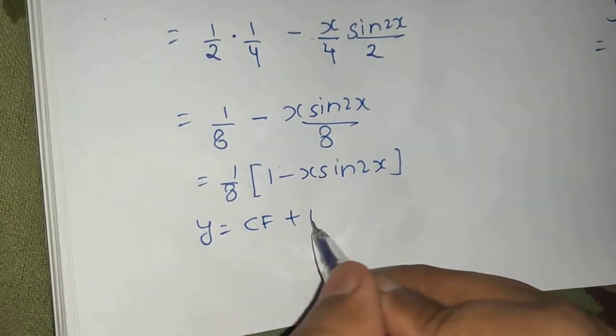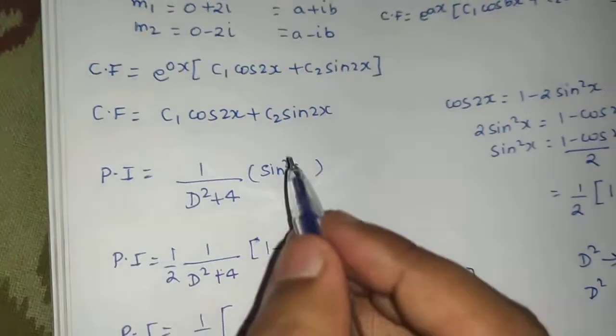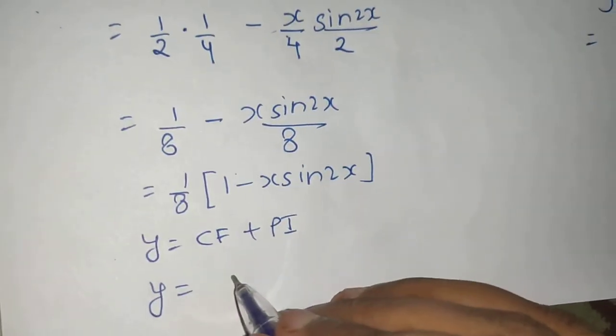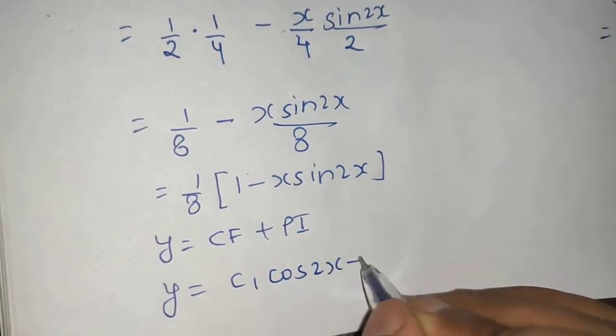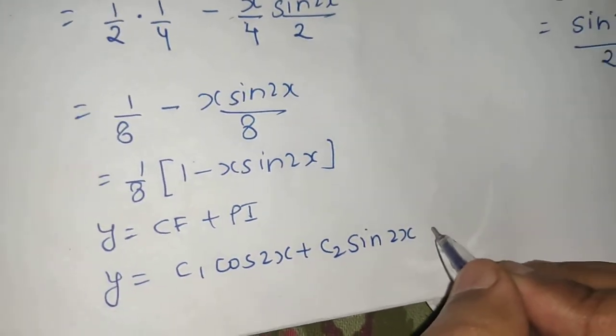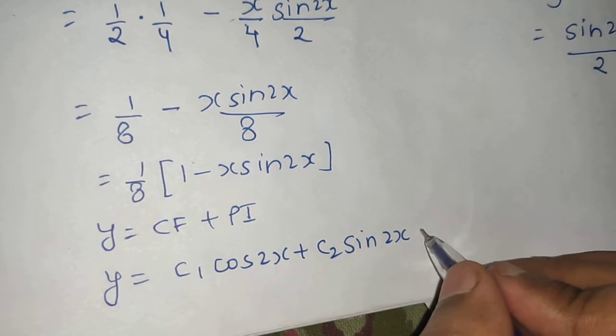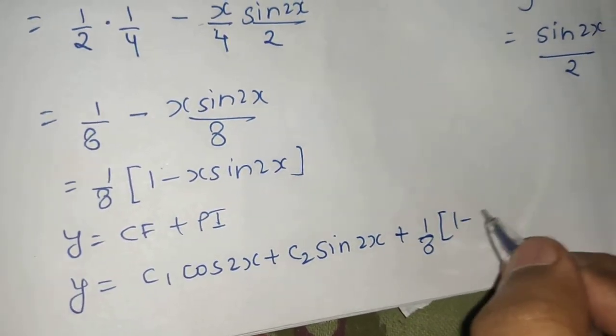So your final solution - your final solution is always y equals to CF plus PI. So y equals to CF was c1 cos 2x plus c2 sin 2x. And what was your PI? PI we recently calculated as 1 by 8 times 1 minus x sin 2x.